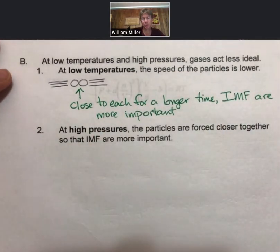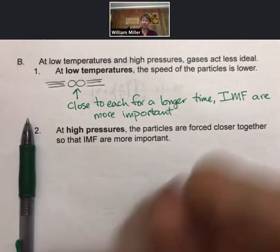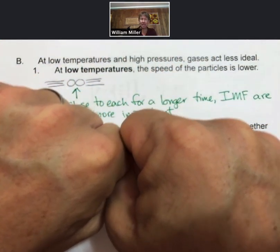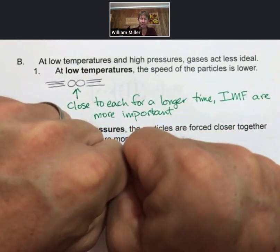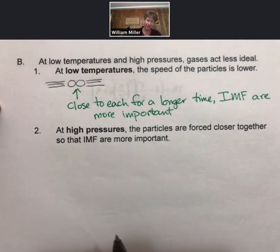We can no longer ignore or neglect intermolecular forces as temperatures go lower. In fact, as temperatures go lower and lower, the kinetic energy decreases. They go slower and slower until the particles, when they collide, actually stick and become liquids. So the ultimate non-ideal gas is a liquid.